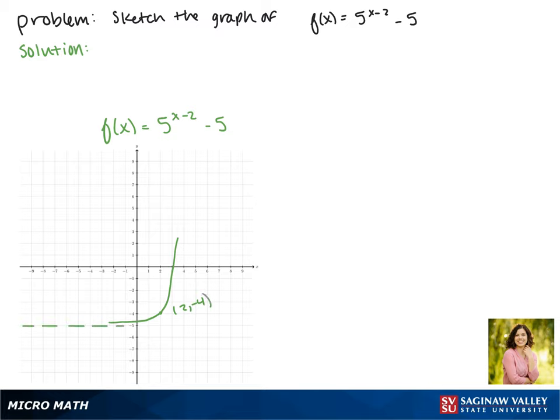Notice that our asymptote shifted down along with our function, making the asymptote at y equals negative 5. This is the graph of our function.